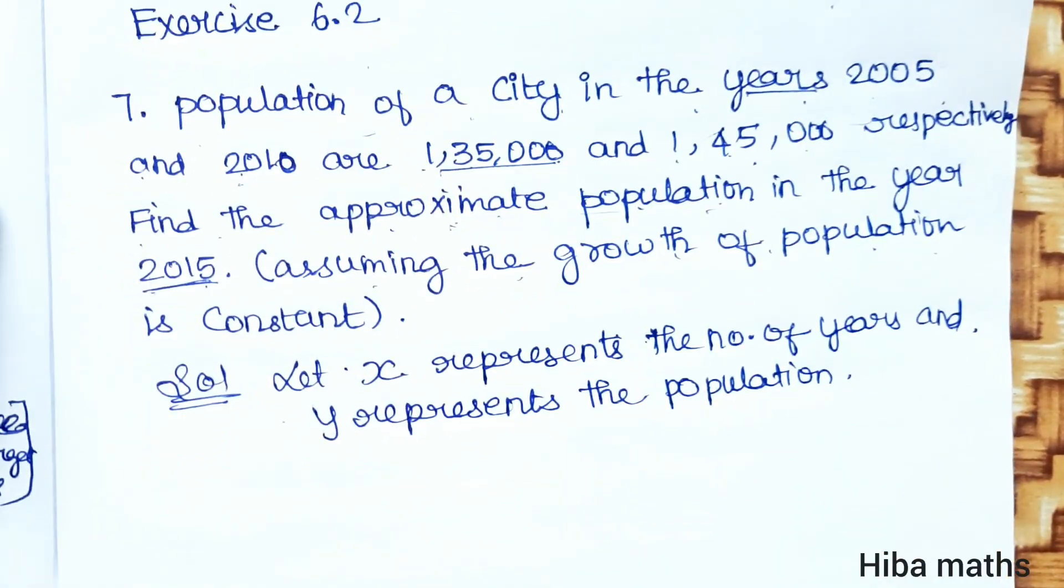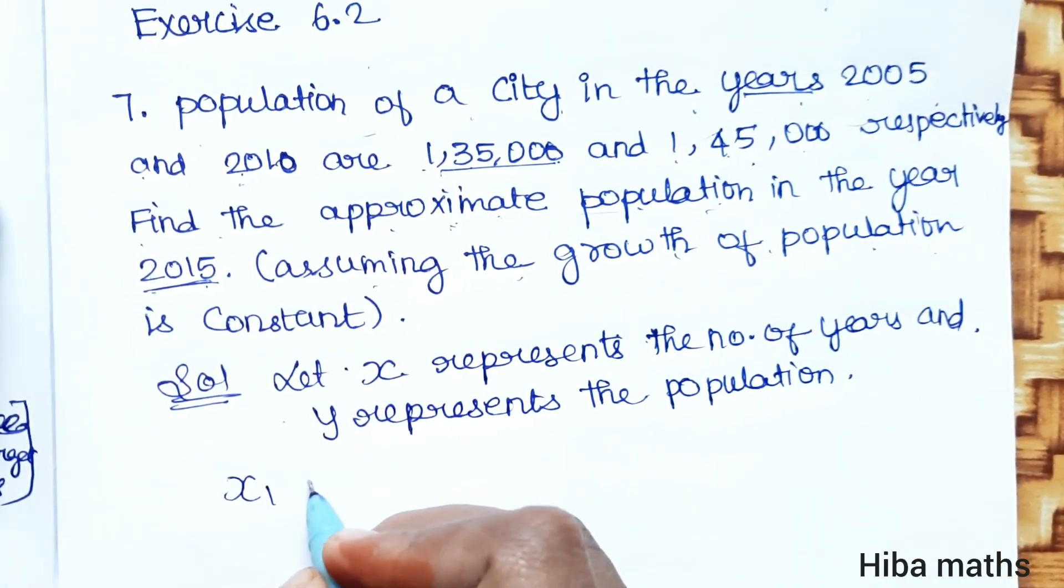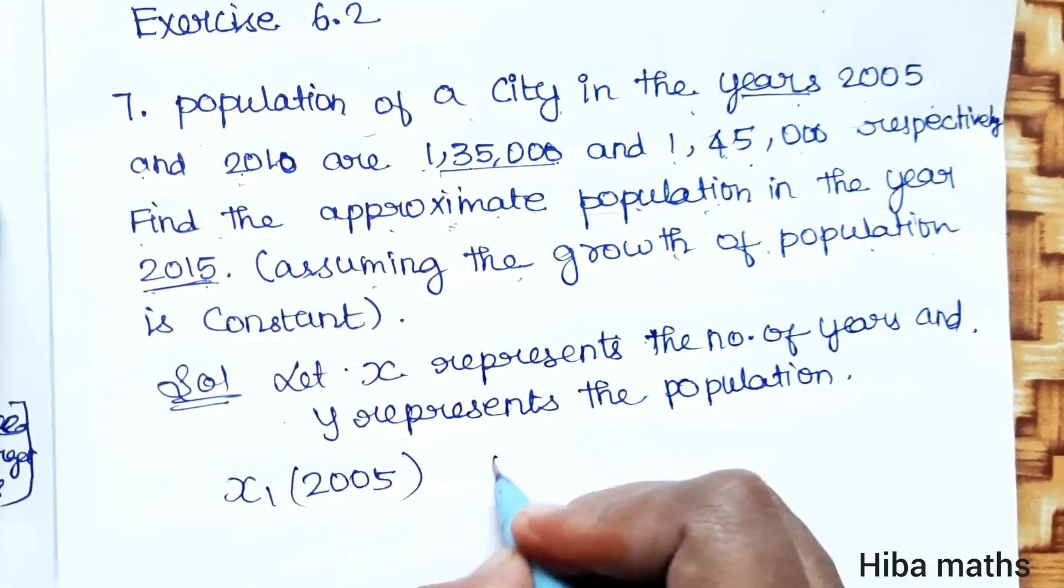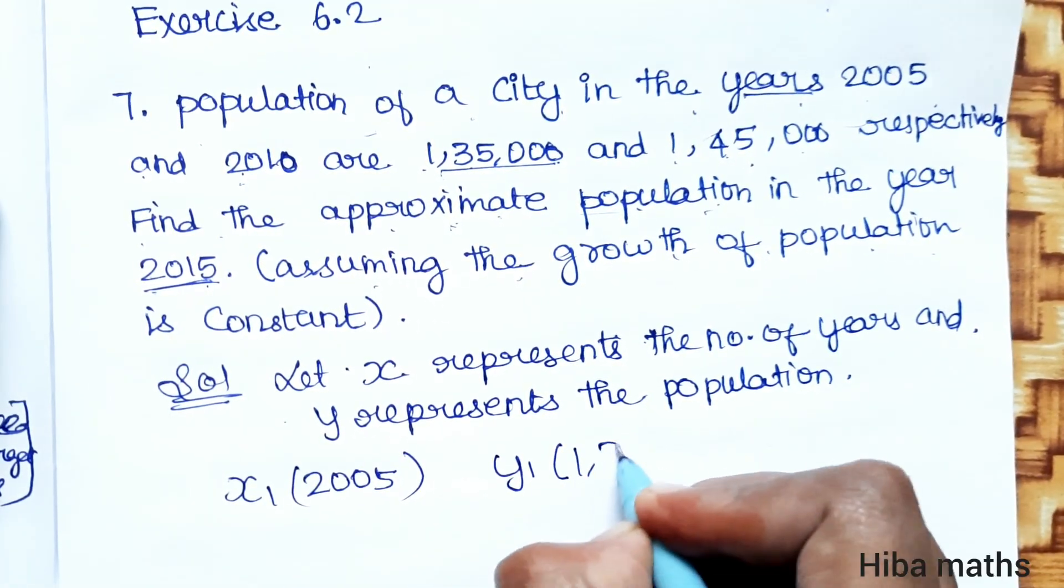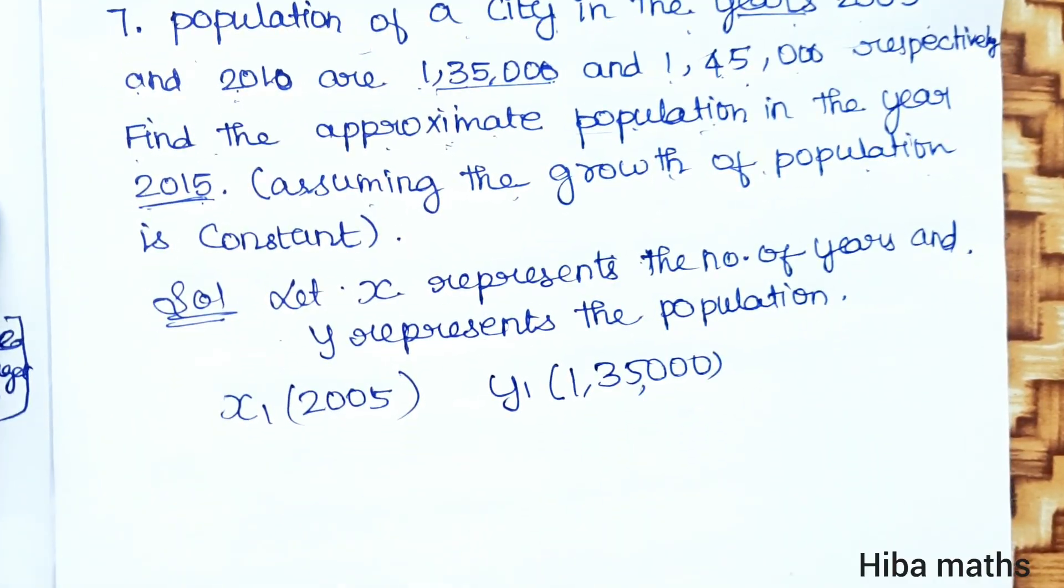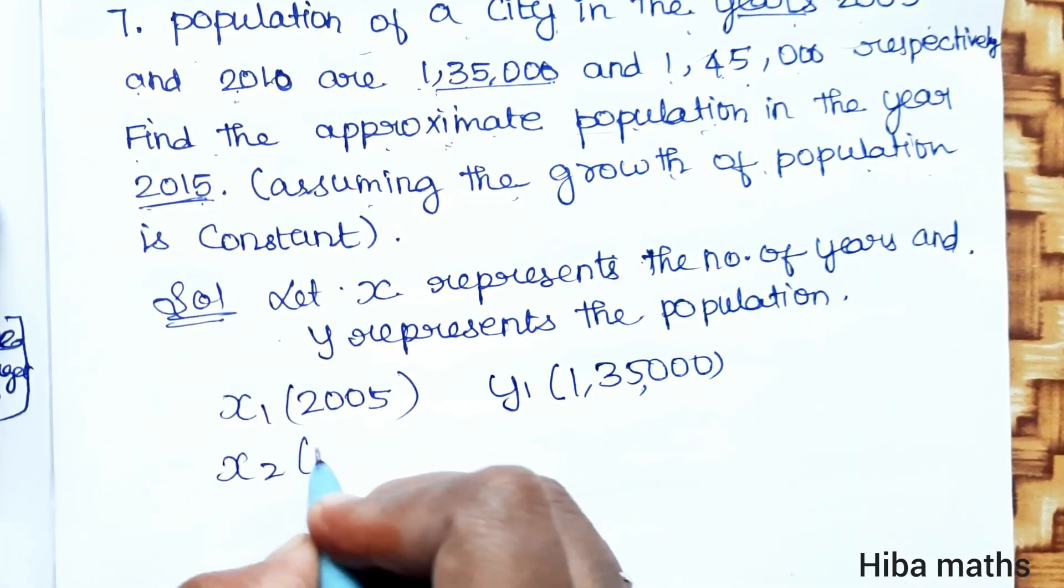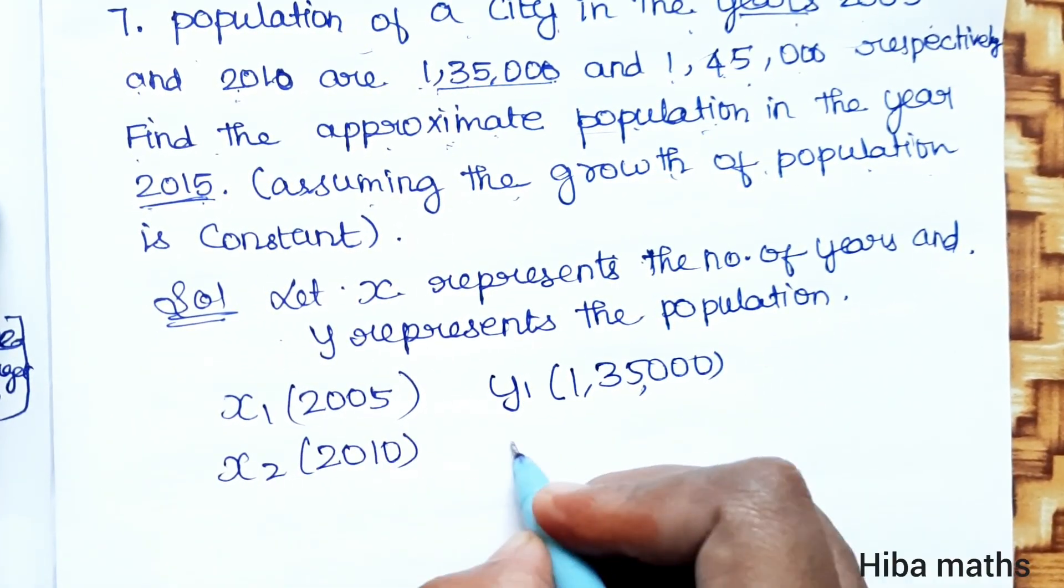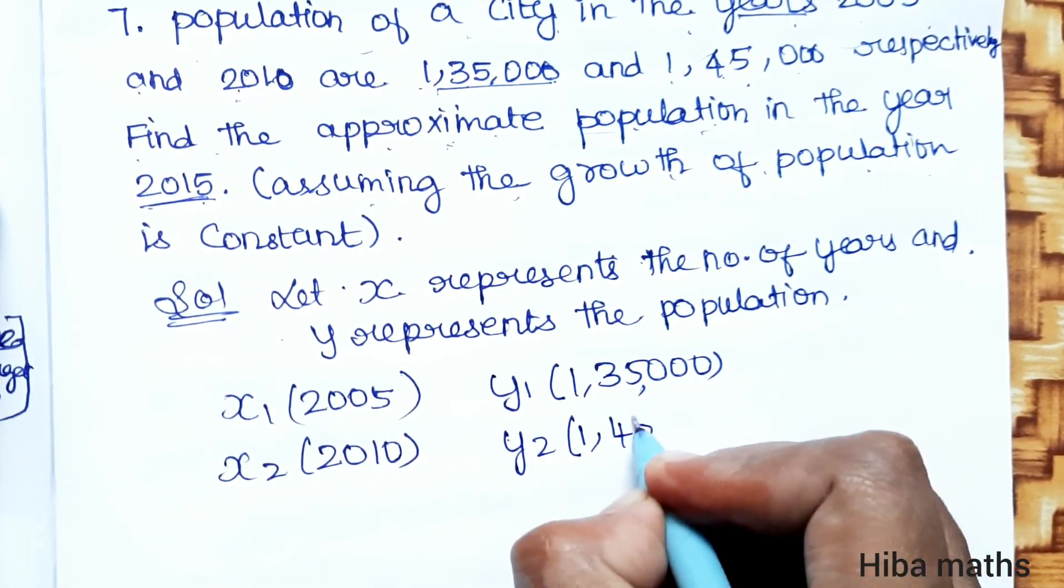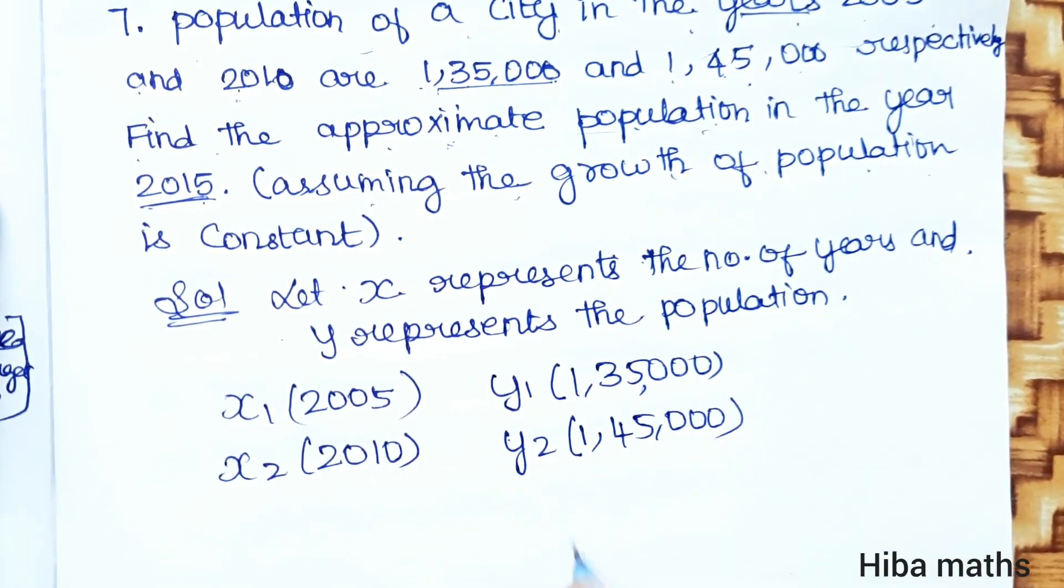Now x1, what is the first point? 2005, that's the population y1, 1,35,000. Second point: x2, 2010, that's the population 1,45,000.